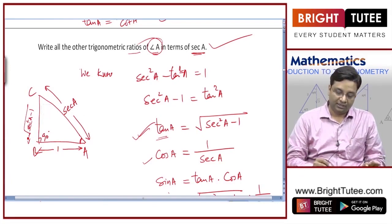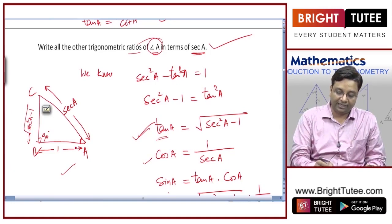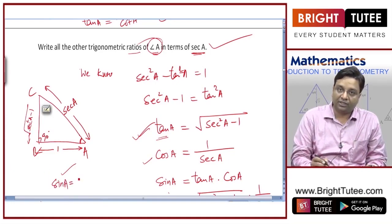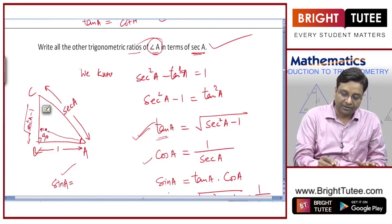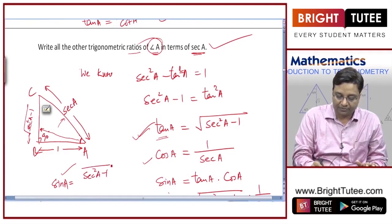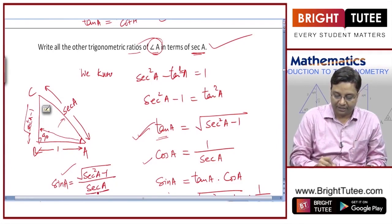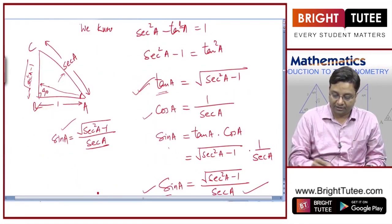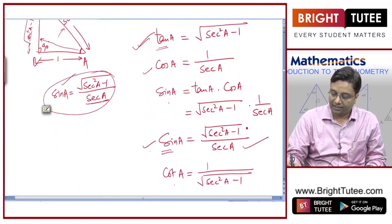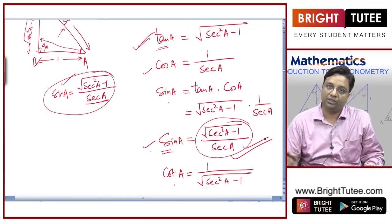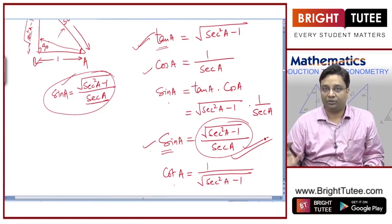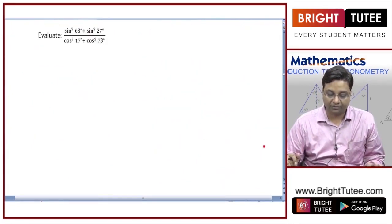By Pythagoras theorem, the opposite side is square root of secant squared a minus one. For example, sin a is opposite by hypotenuse — square root of secant squared a minus one divided by secant a — which matches our earlier answer. You can use either method to solve this question.